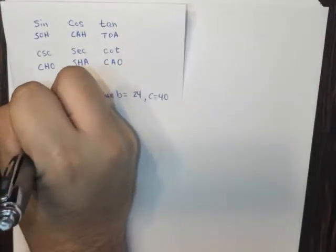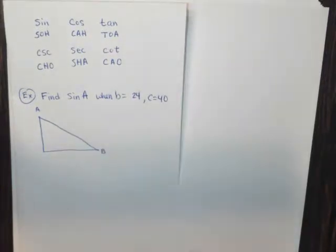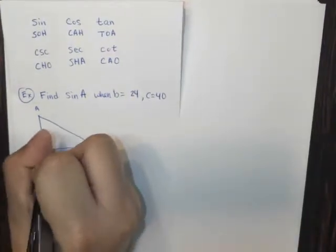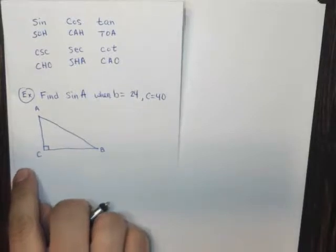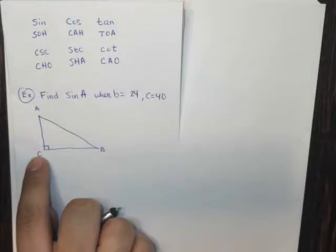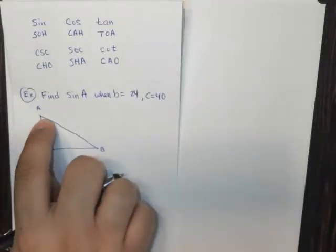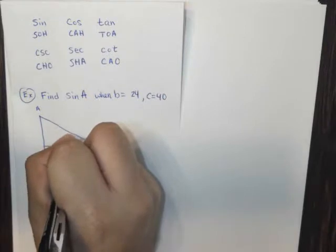Let's say that I call this angle A, I call this angle B, and I'm going to call this angle C, and angle C is the right angle. Well, these are the three angles of the triangle. Now the sides, to label the sides, it's always opposite of the letter. So if this is angle A, this opposite side here is side A.